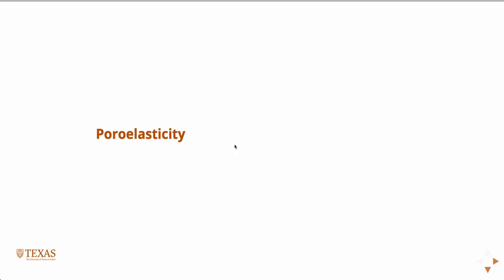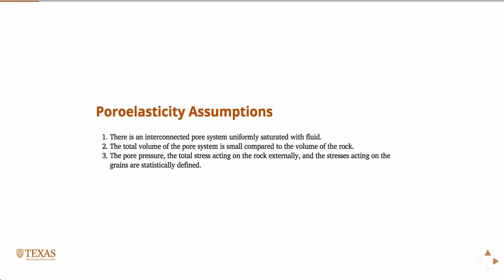Last time we started talking about poroelasticity. We have three main assumptions: there's an interconnected pore system; the total volume of the pore system is small compared to the rock; and that the pore pressure, the total external stress, and the stress on the grains are statistically defined — which basically means we can use averages. There's a separation of length scales so we can use homogenization.